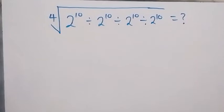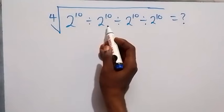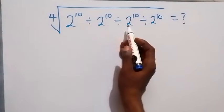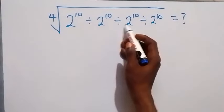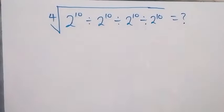Hello, you are welcome. How to solve this nice exponent problem involving roots. We have the fourth root of 2 raised to power 10, divided by 2 raised to power 10, divided by 2 raised to power 10, divided by 2 raised to power 10.